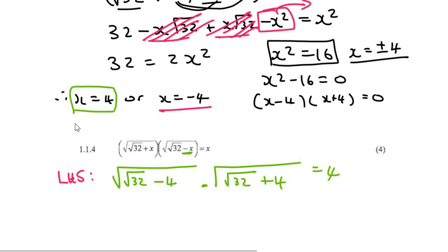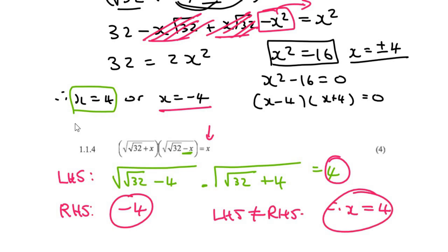I would then have a look at the right-hand side, which is just the negative 4. And so have a look at this. The left-hand side and the right-hand side are not equal to each other, and so therefore x can only be equal to 4.